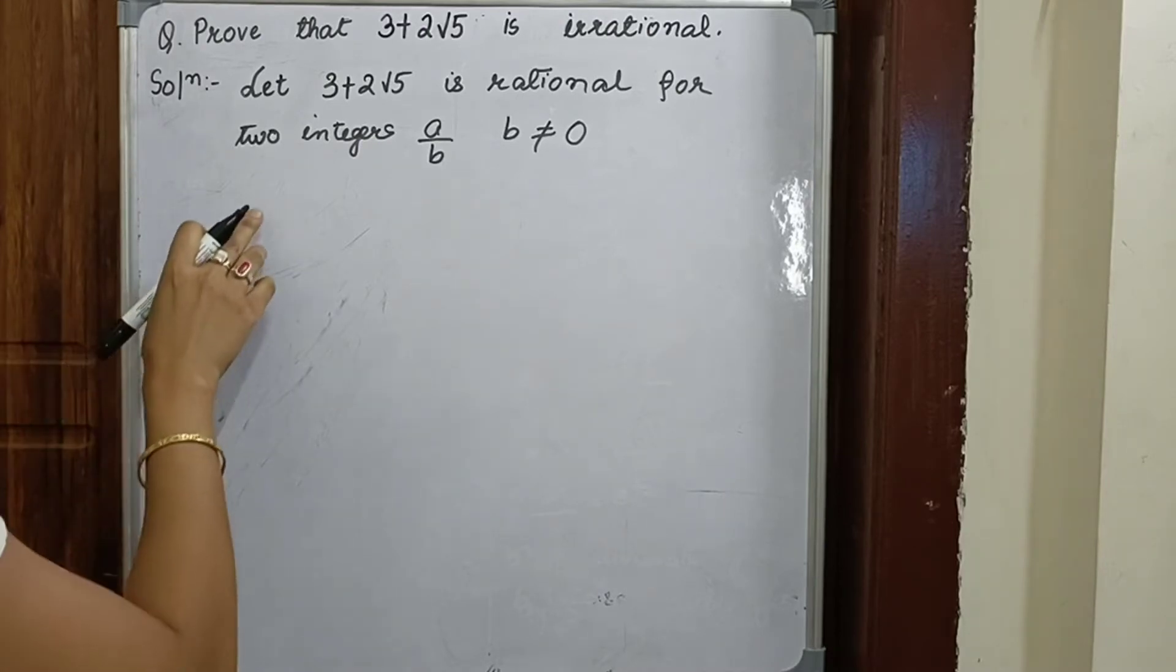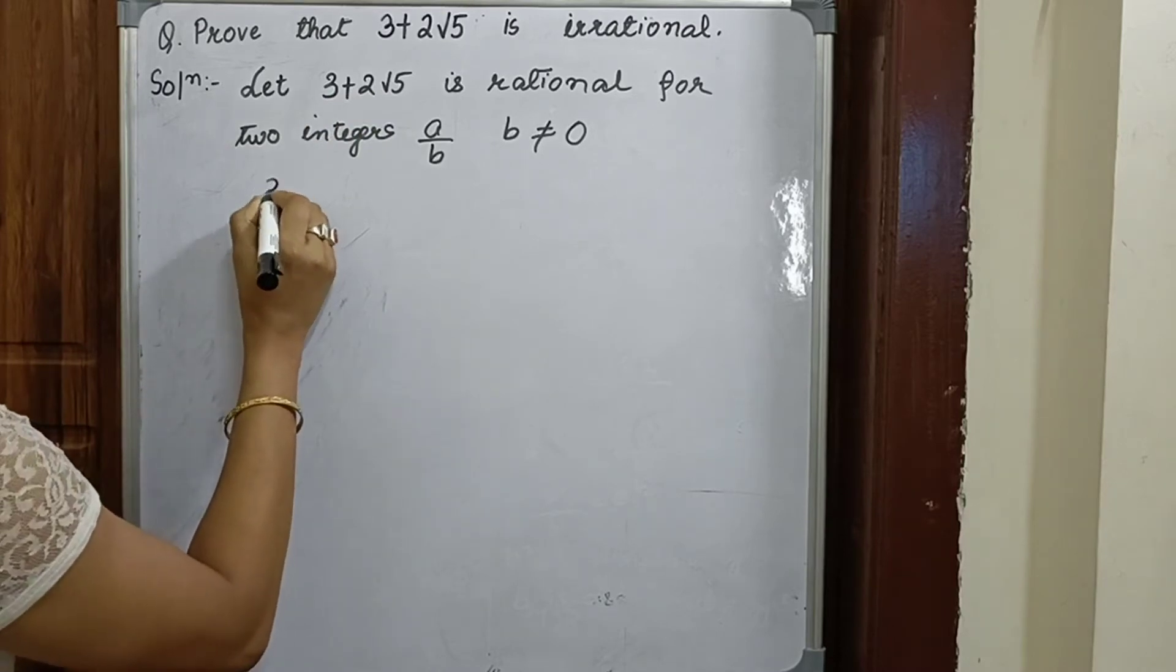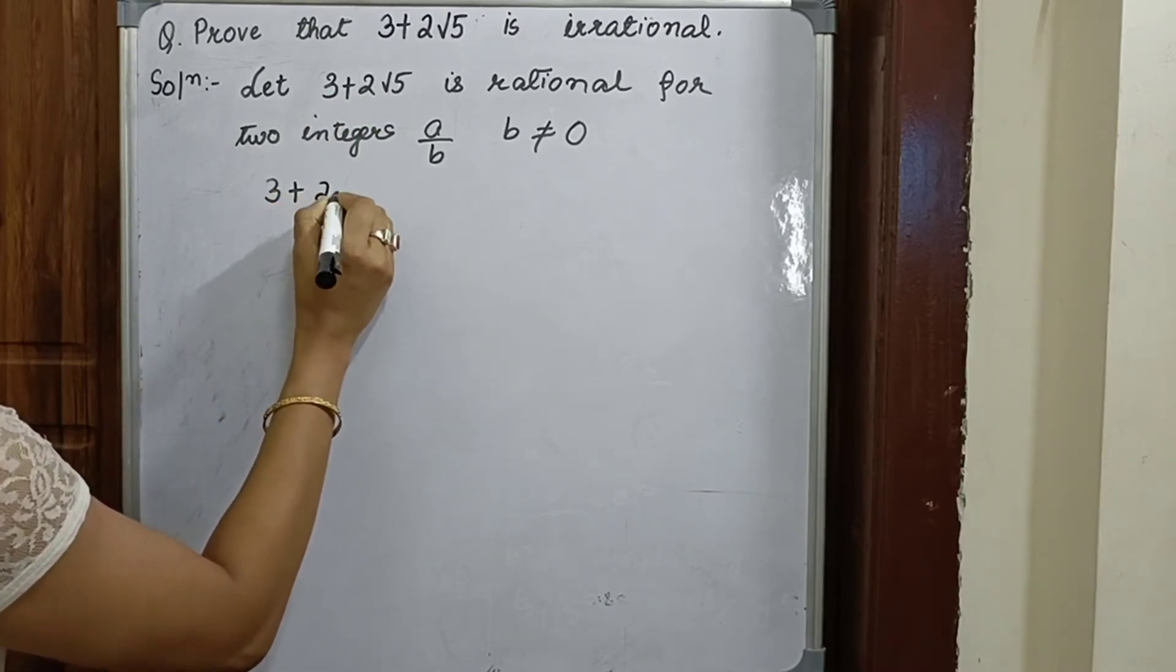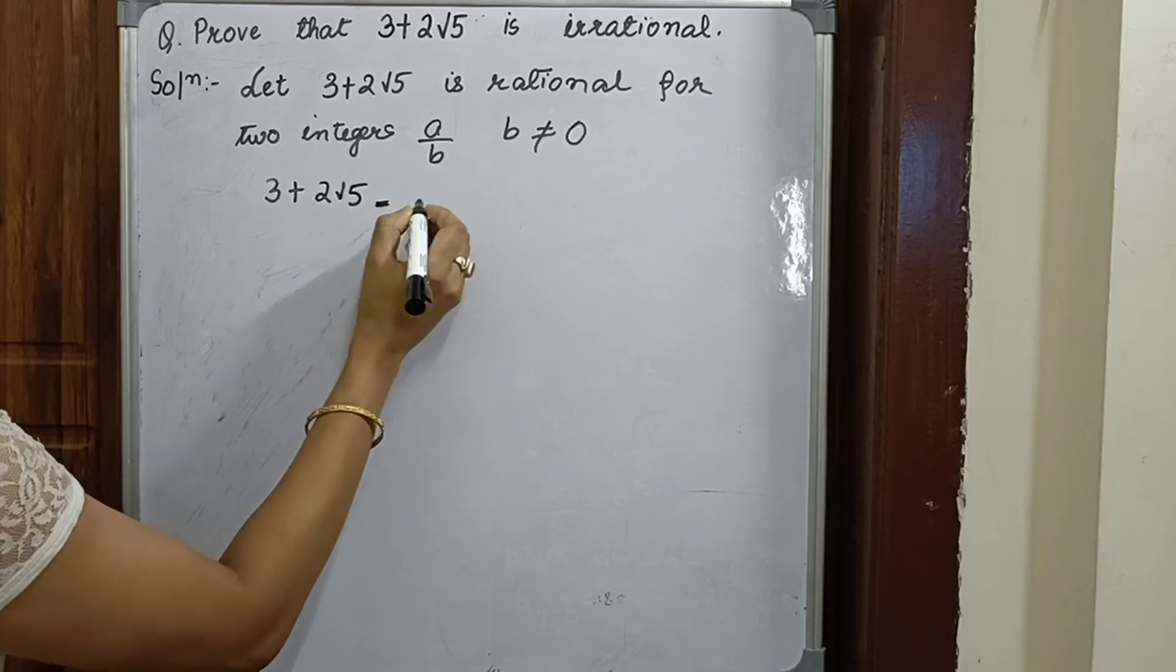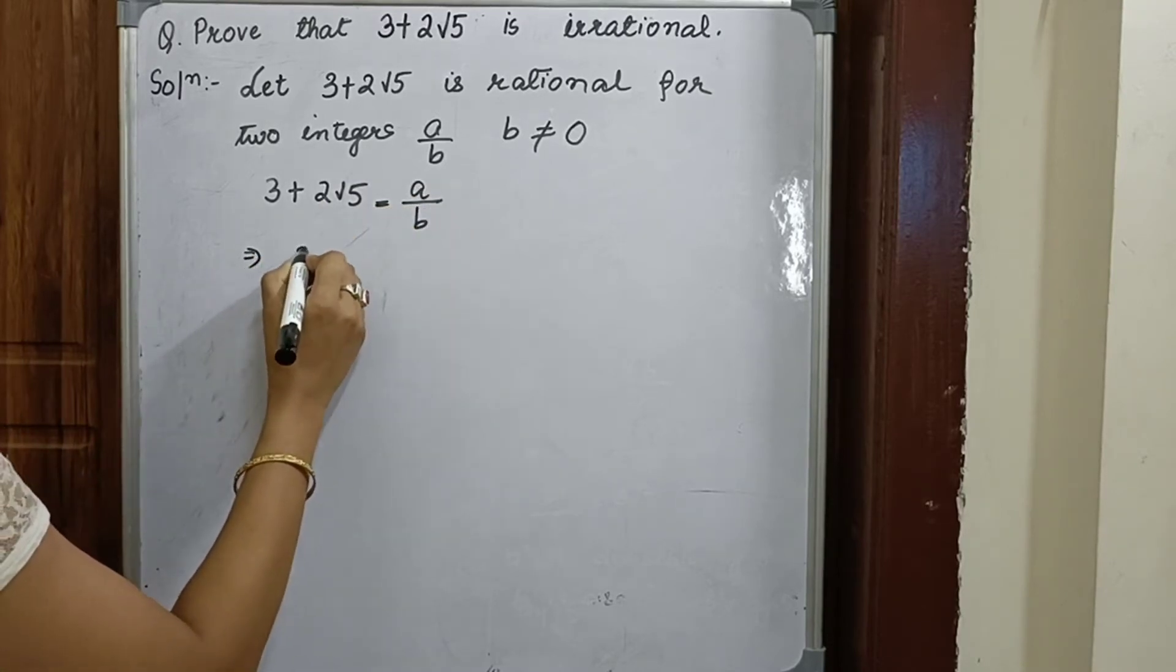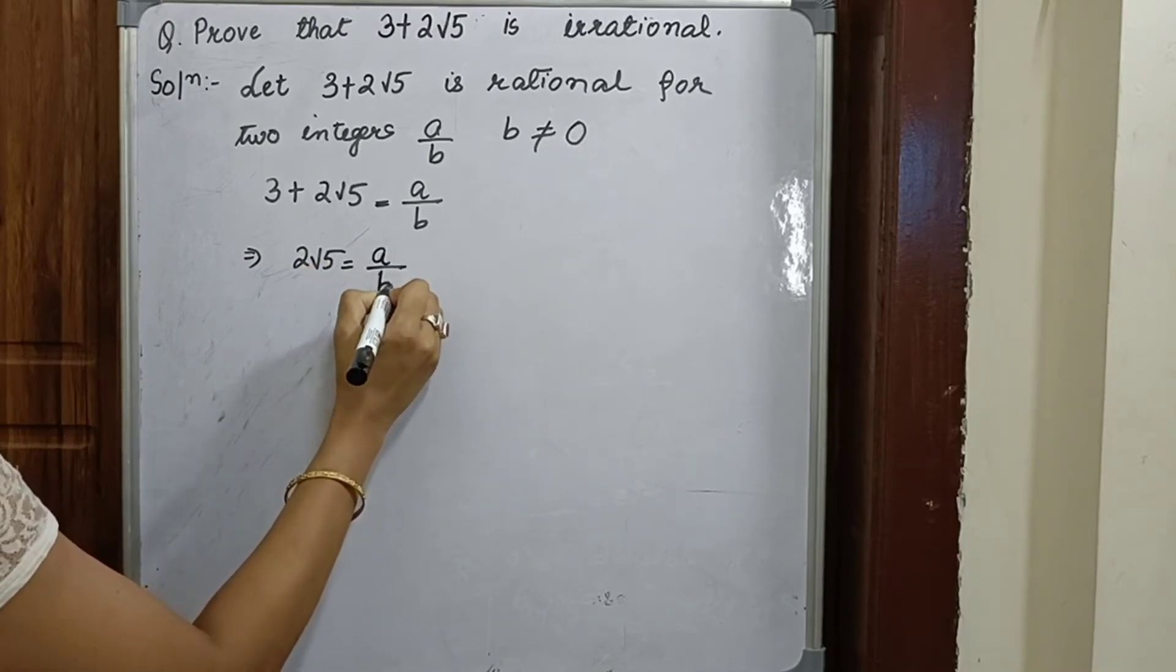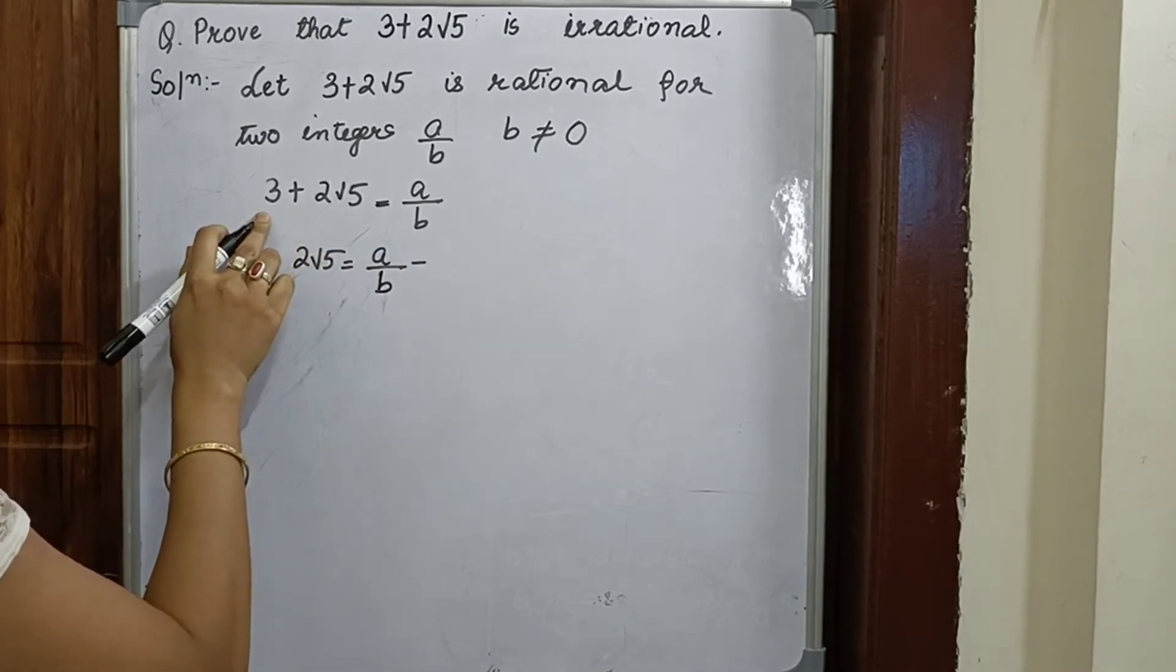So let 3 plus 2 root 5 be rational. Then 3 plus 2 root 5 equals a by b. 2 root 5 equals a by b minus 3. We'll take this 3 to the right hand side.